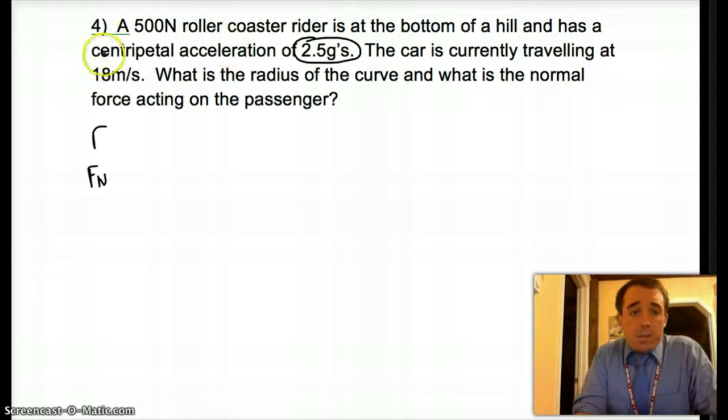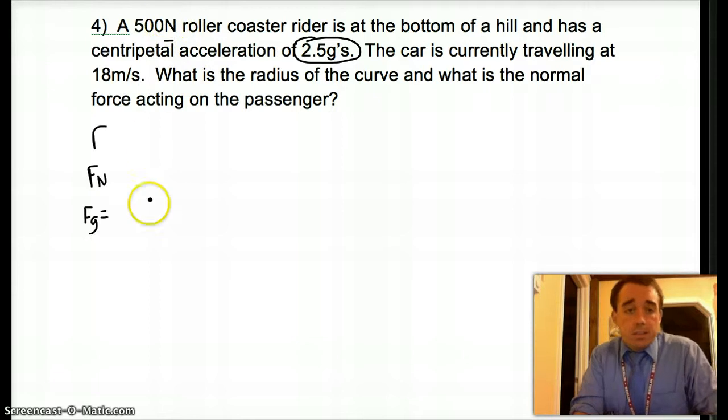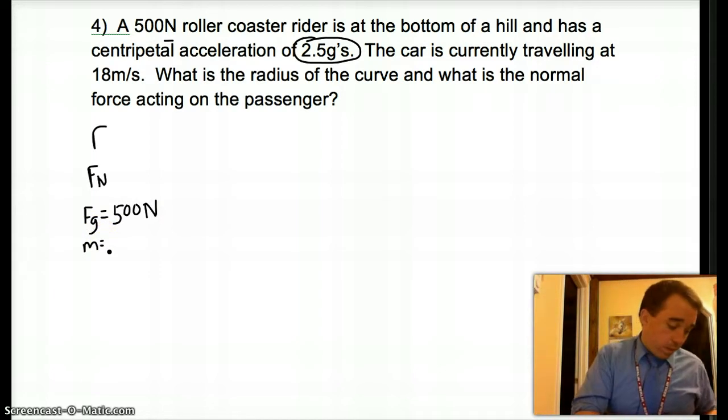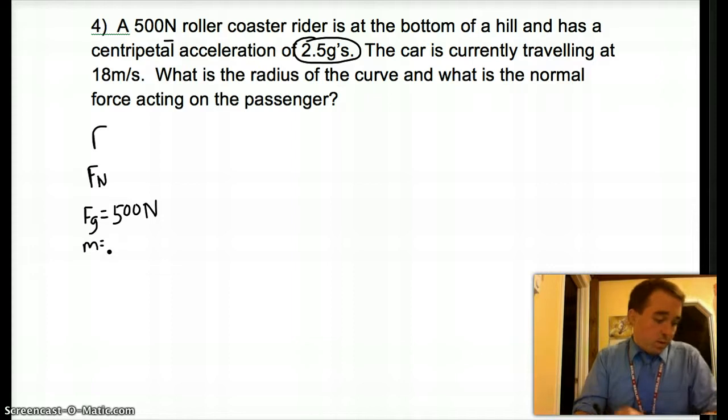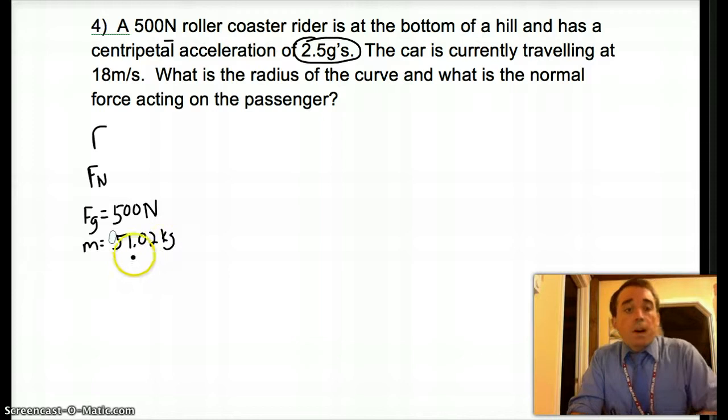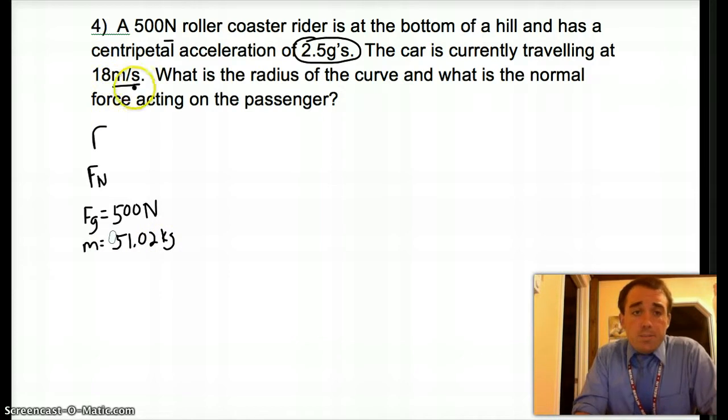Okay, so some of the things we have. 500 Newtons, I see that in Newtons, that's telling me that is the weight of the passenger, not the mass because it's in Newtons. So 500 Newtons. I can find the mass by taking 500 over 9.8, which is 51.02 kilograms. 18 meters per second. So meters per second, that tells me that has to be a speed, which has to be the tangential velocity.